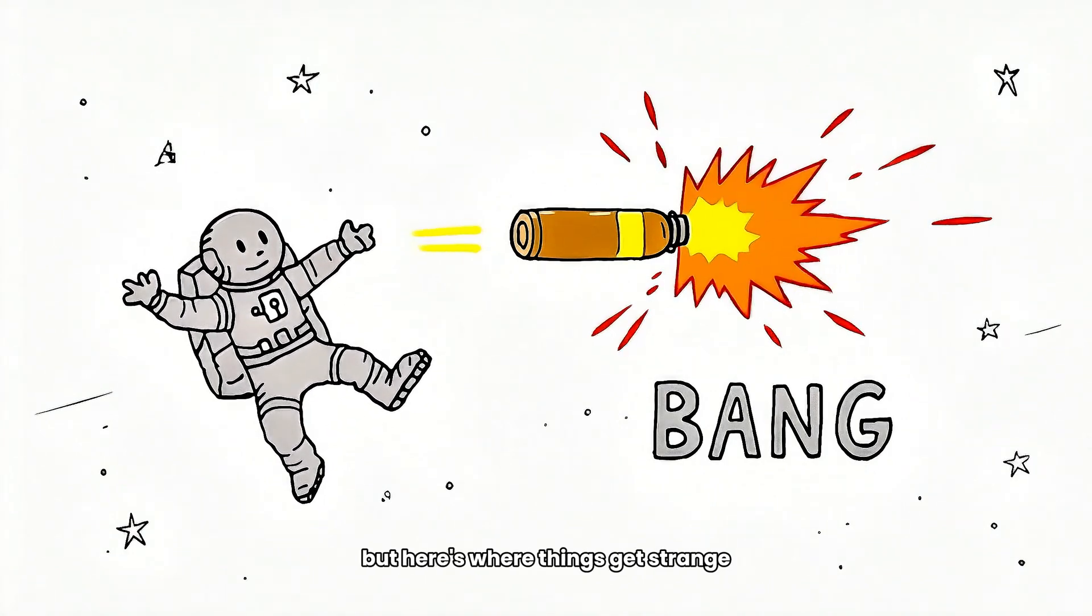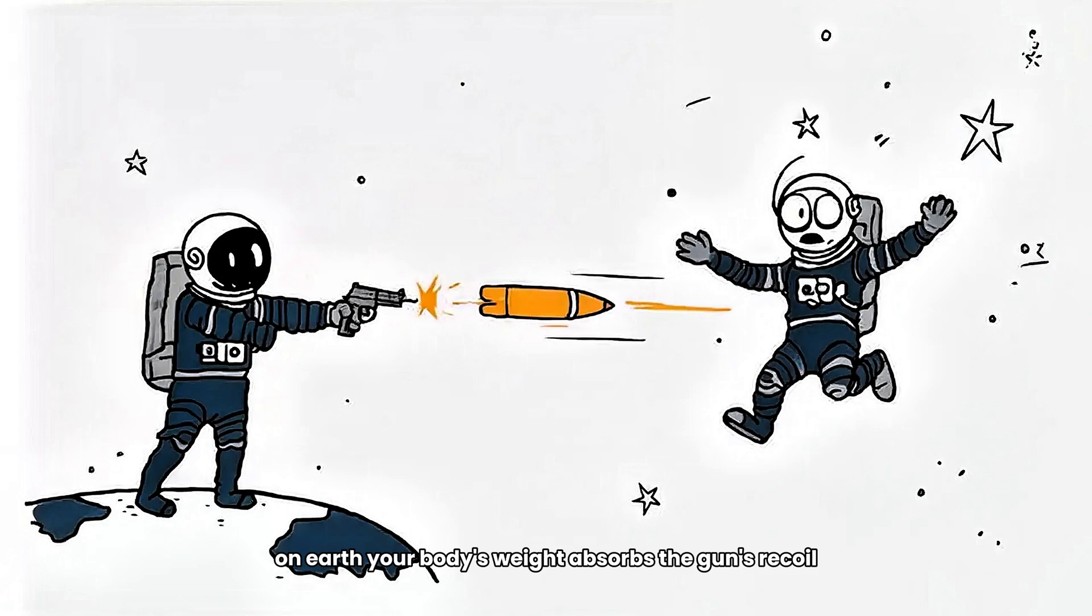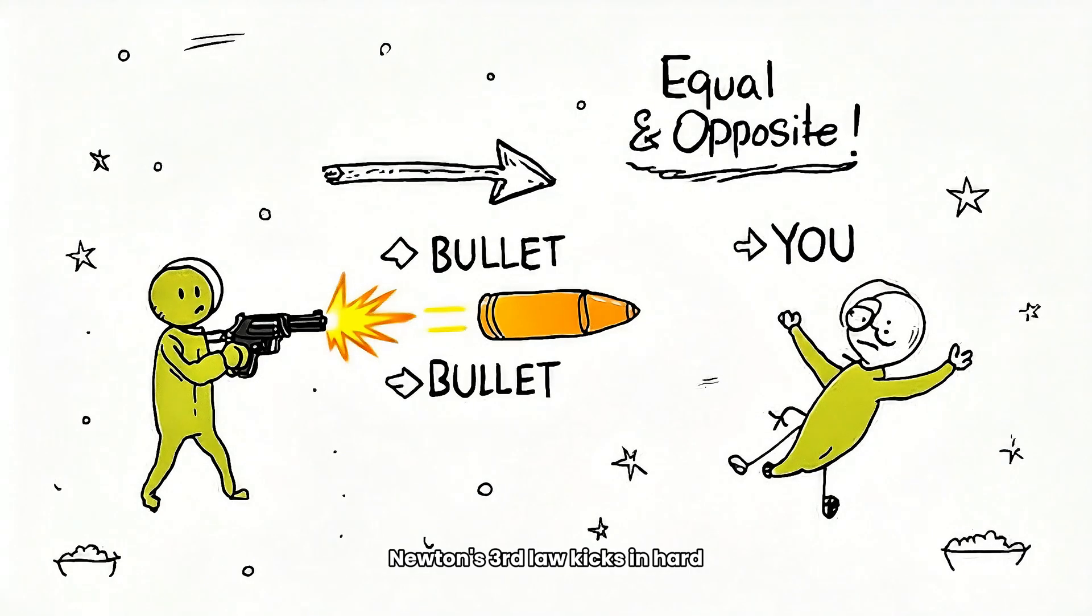But here's where things get strange. On earth, your body's weight absorbs the gun's recoil. In space, there's no gravity and no friction. So when you shoot, you move. Newton's third law kicks in hard. For every action, there's an equal and opposite reaction.